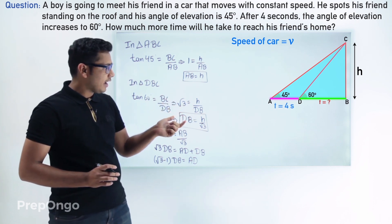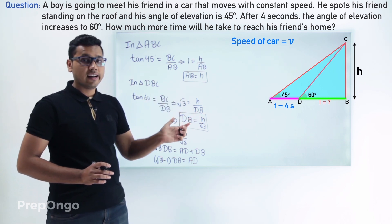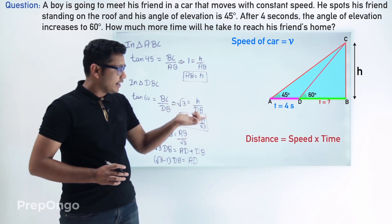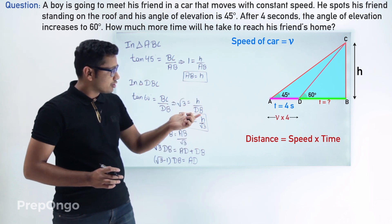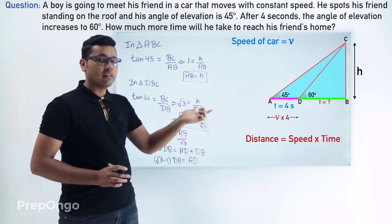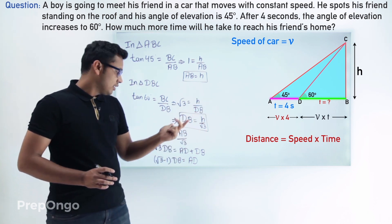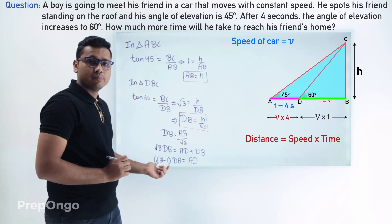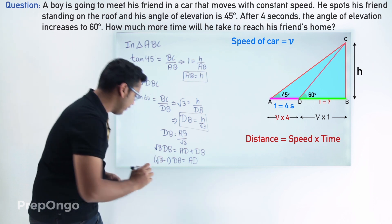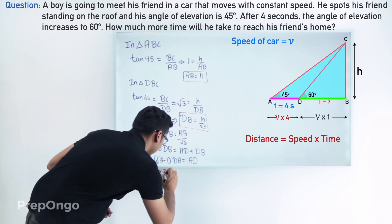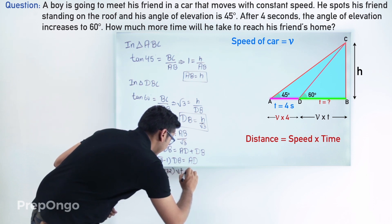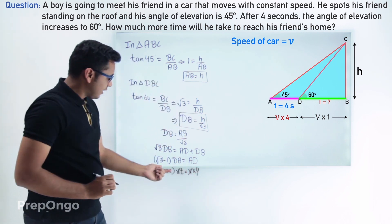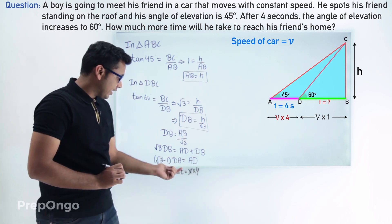The car moves with constant speed V, takes 4 seconds from point A to point D, and let's say it takes time T to travel from point D to point B. So AD equals V × 4 and DB equals V × T. Substituting into (√3 − 1) · DB = AD: (√3 − 1) · V·T = V · 4. The V cancels. With √3 ≈ 1.732, we get 0.732 · T = 4, giving T ≈ 5.48 seconds.